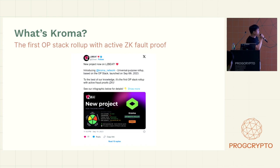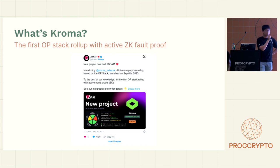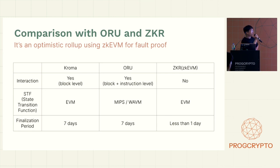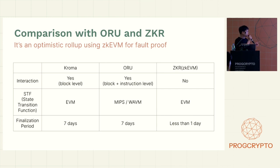Chroma is the first type-one stack rollup with active zkEVM proving, certified all-to-bit. In simple terms, it's an optimistic rollup using zkEVM for fault proof. Like any other optimistic rollups, it has an interaction, but only at the block level, and it also has a seven-day challenge period. But here's a twist: zkEVM plays a role in dealing with dispute resolution.